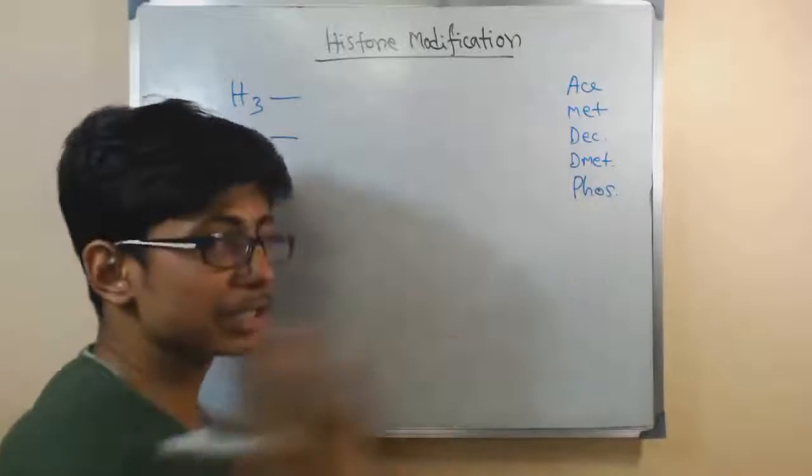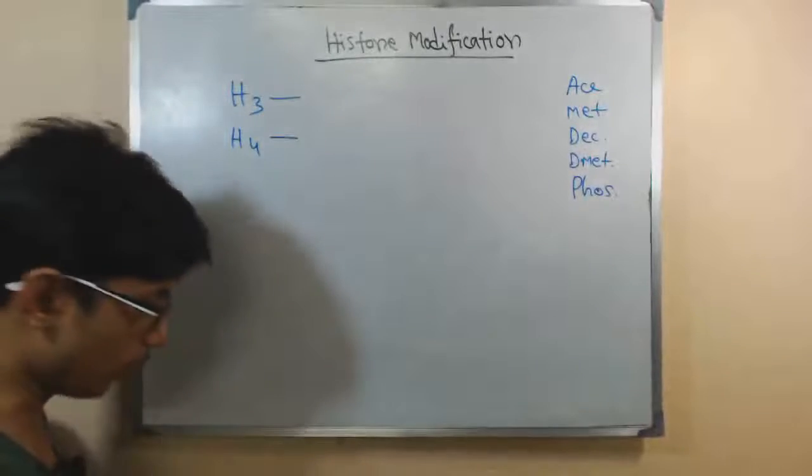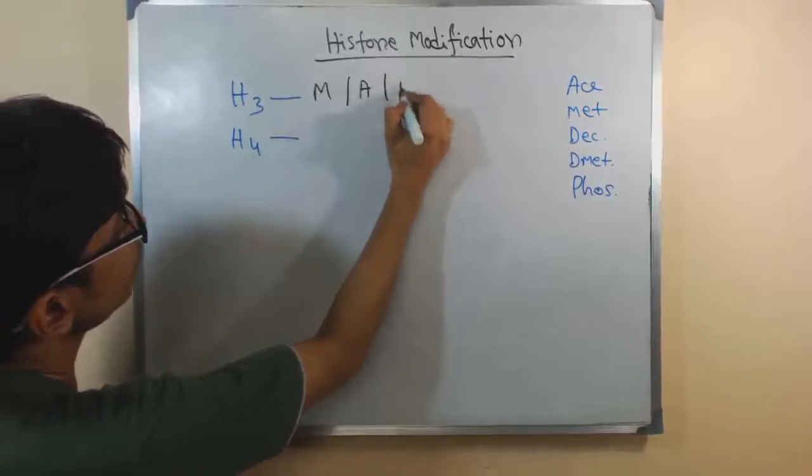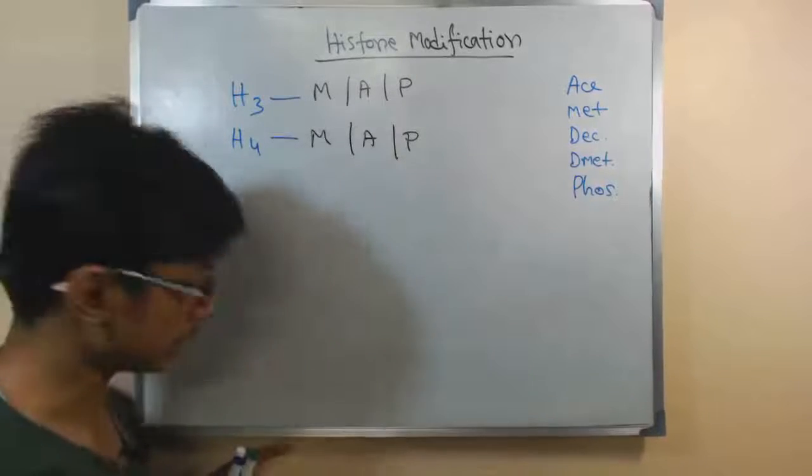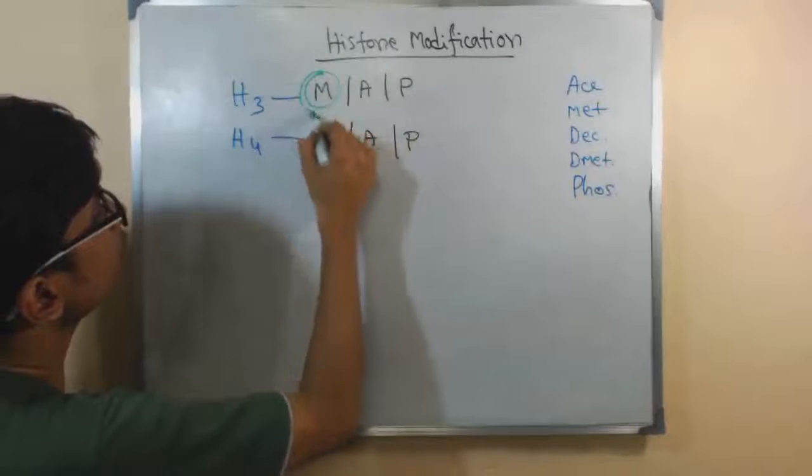We have also seen how acetylation takes place on a major scale. But if you look at here in histone 3 and 4, all of these are vulnerable to methylation, acetylation, and phosphorylation. They can have all of these modifications.